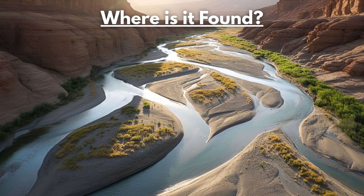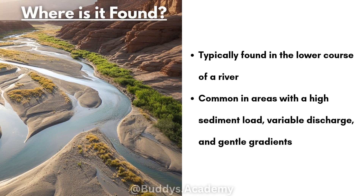So where are braided streams found? They're typically found in the lower course of a river, and they're common in areas with a high sediment load — because that's basically why a braided stream forms: because of the high sediment load, or the amount of sand or pebbles in the river.